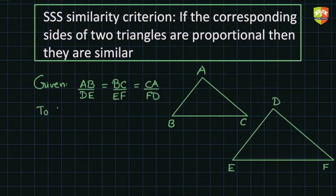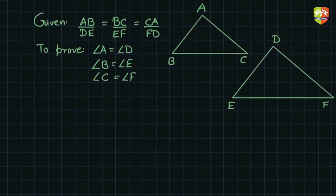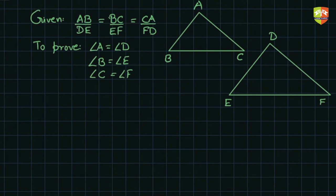And we have to prove that these two triangles are similar — in other words, angle A is equal to angle D, angle B is equal to angle E, and angle C is equal to angle F. This is what we need to establish.